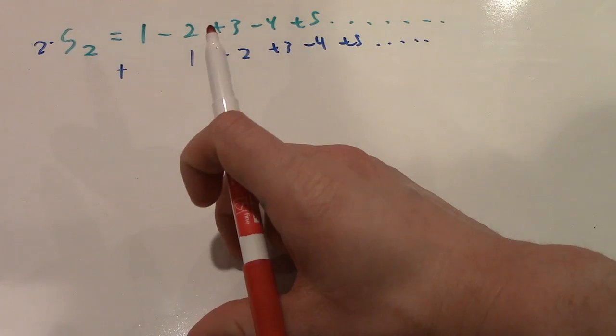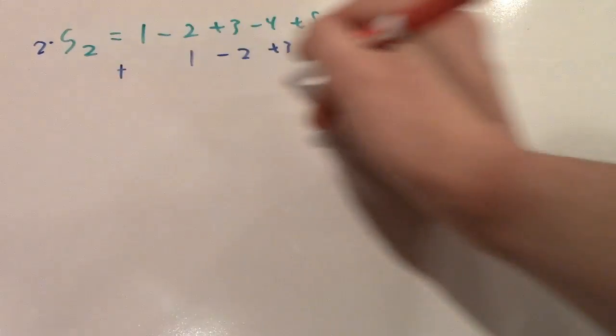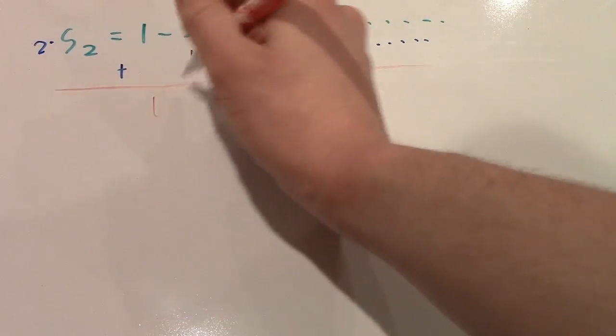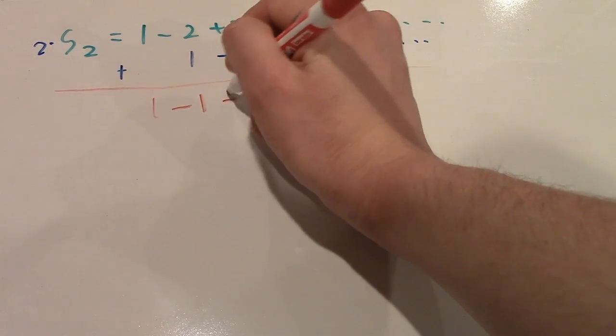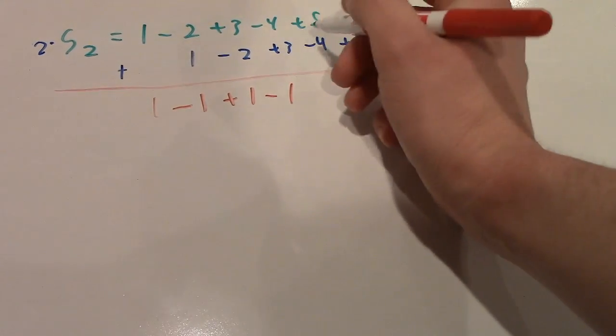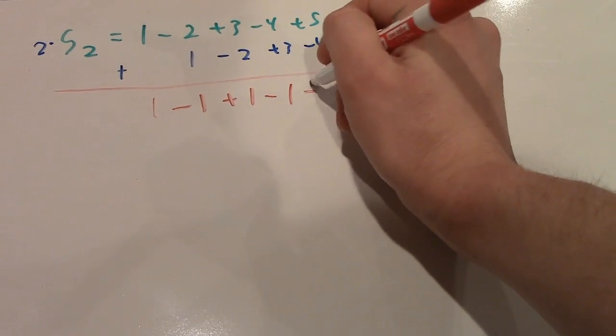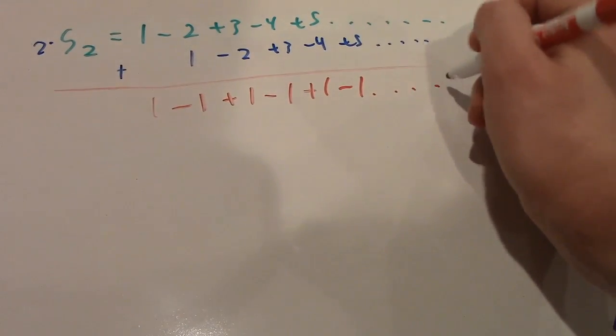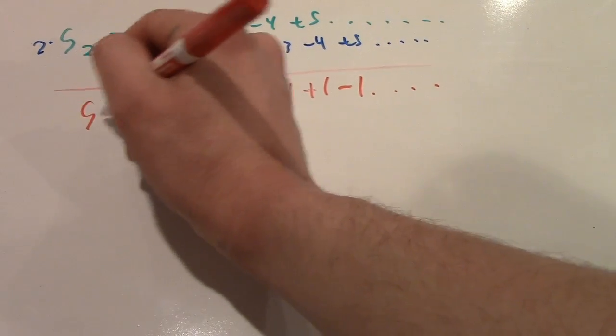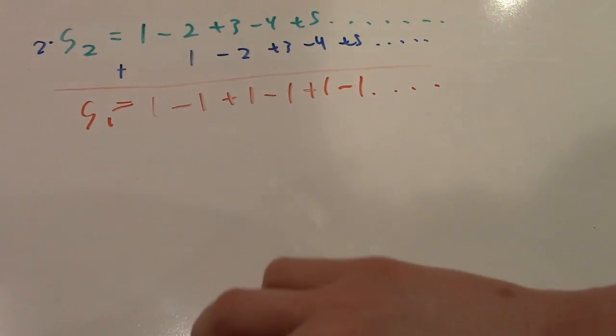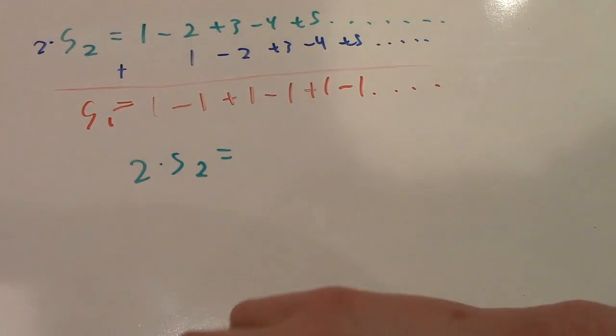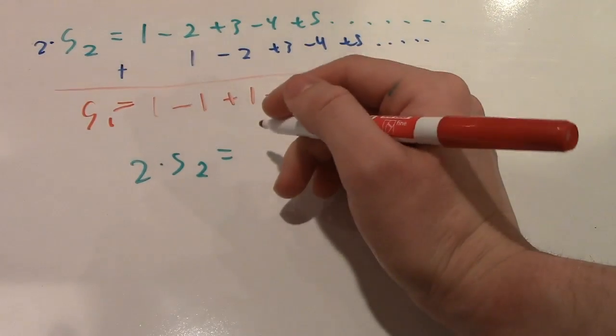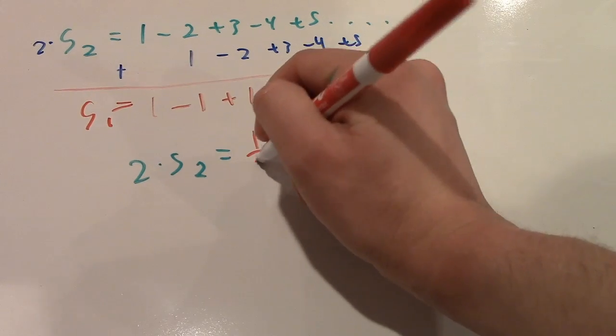Now, when we sum these, we just simply add them up. We have 1, and then negative 2 plus 1, that is negative 1, and then 3 minus 2, that's just positive 1, and negative 4 plus 3, we got negative 1, and 5 minus 4, that's positive 1, and so on. And you'll notice that this is actually equal to our first sum. So, this means that 2 times our second sum is equal to our first sum. And, as we showed earlier, our first sum was equal to 1 half.